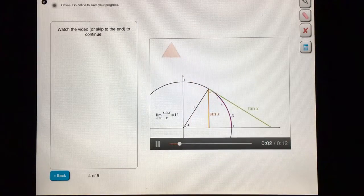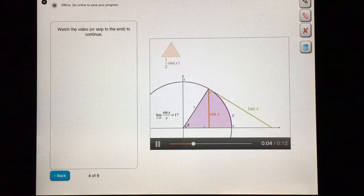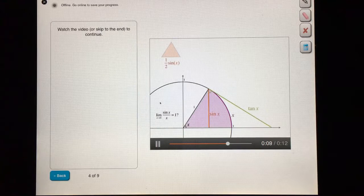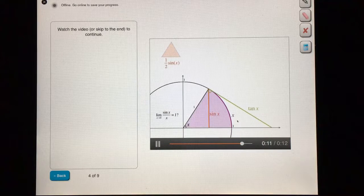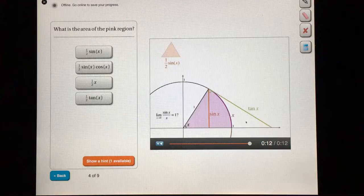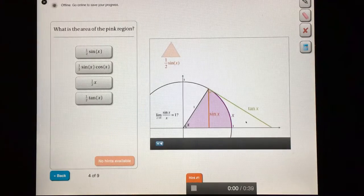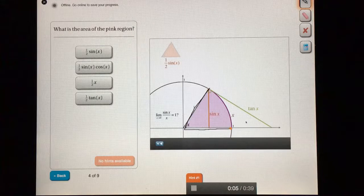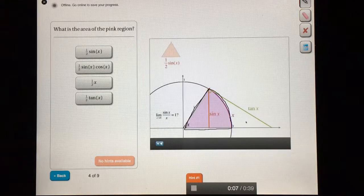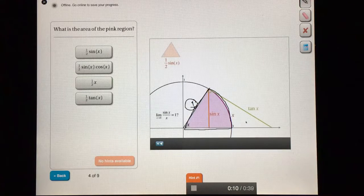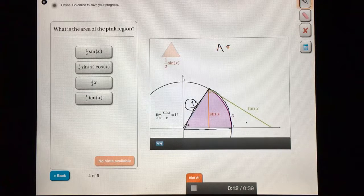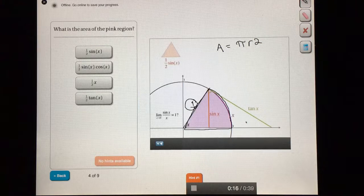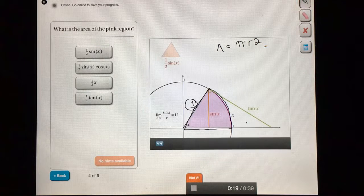Great. Now try to find the area of this purple region. This is a fraction of the circle. So if you remember how to find the area of a circle, you can take a fraction of it to get this purple area. This purple area is a sector of a circle. The circle has radius one here. So the area of a total circle is going to be pi times the radius squared. But we only want a fraction of it. What fraction do we want?